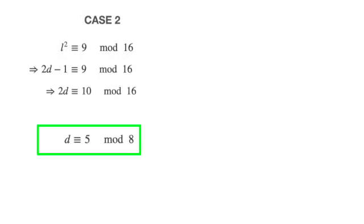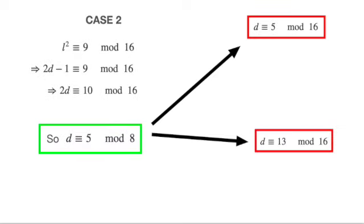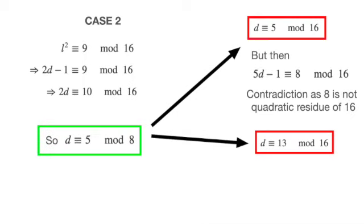Dividing by 2 throughout, we see that d must be congruent to 5 modulo 8. Again, as in the case above, either d is congruent to 5 modulo 16, or d is congruent to 13 modulo 16.